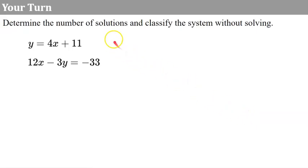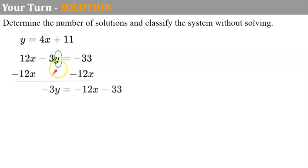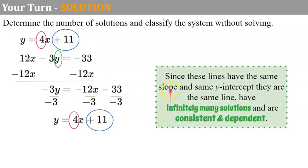Your turn again. Please determine the number of solutions and classify the system without solving. The first equation is already in slope-intercept form. For the second equation, I subtract 12x from each side, giving negative 3y equals negative 12x minus 33, then divide every term by negative 3: y equals positive 4x plus 11. Comparing both equations, they have the same slope and the same y-intercept — they are the same line. Therefore, they have infinitely many solutions and the system is consistent and dependent.